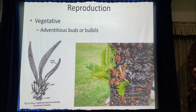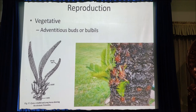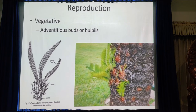Cycas reproduces vegetatively and sexually. Vegetative reproduction occurs by means of adventitious buds or bulbils, which develop from the basal part of the stem. After falling on the soil, they develop into new plants. Bulbils from male plants develop into male plants, and bulbils from female plants develop into female plants. In some species, suckers may develop from the roots and grow to form new plants.